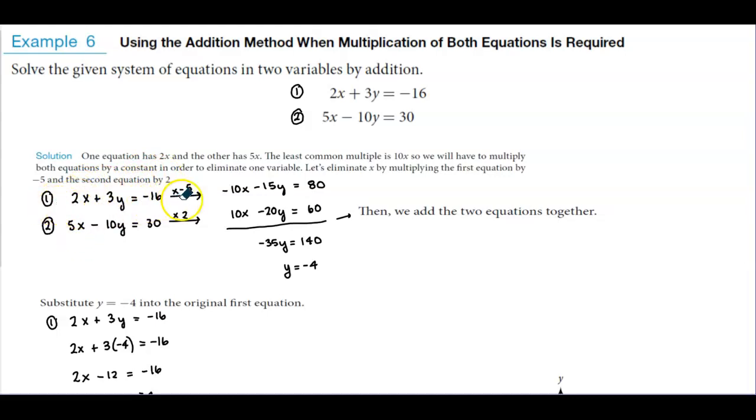We're going to multiply the first equation by negative 5, and drawing arrows allows us to backtrack and make sure we're following the right number pattern. Multiplying every term by negative 5: negative 5 times 2x is negative 10x, negative 5 times positive 3y is minus 15y, and negative 5 times negative 16 is 80.